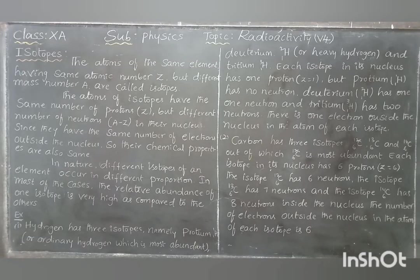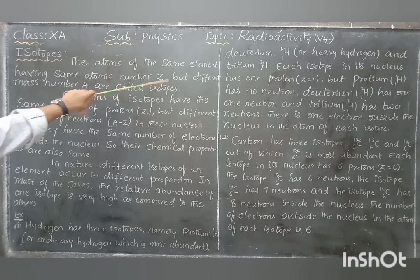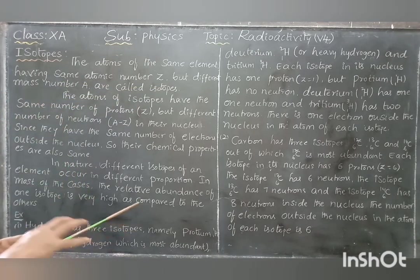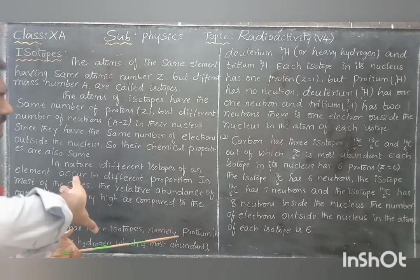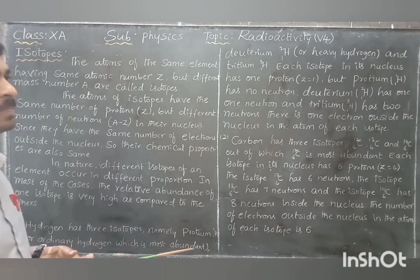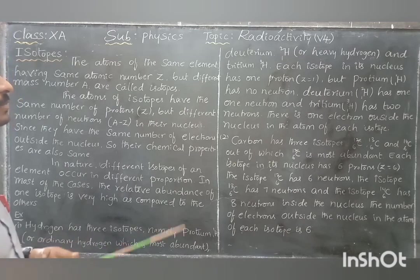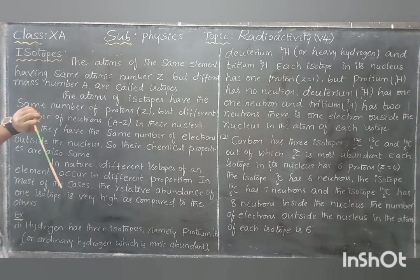Next, isotopes — very very important. The atoms of the same element have the same atomic number but different mass number are called the isotopes. If you take an atom of the same element, the element is same, the atomic number is same, but mass number is different — then we call it as isotopes.